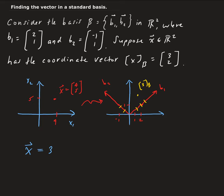So this will be 3 times beta 1 plus 2 times beta 2. So we're going to get 3 times [2, 1] plus 2 times [-1, 1].